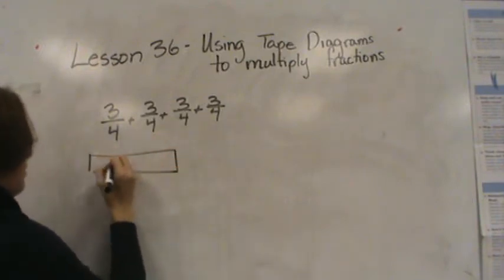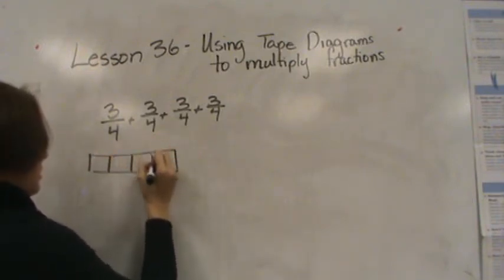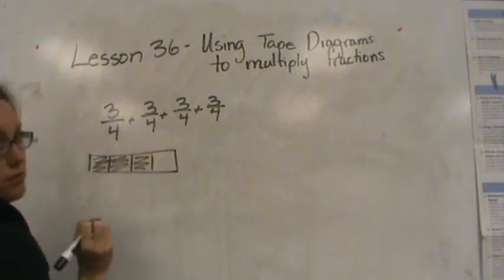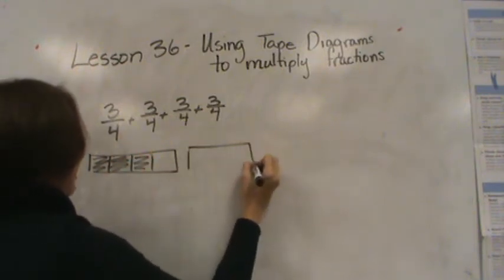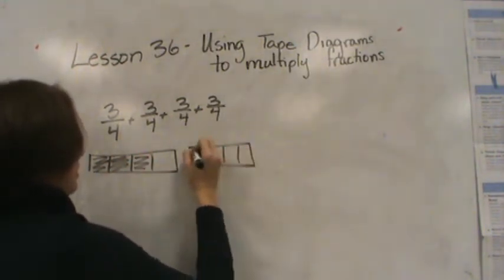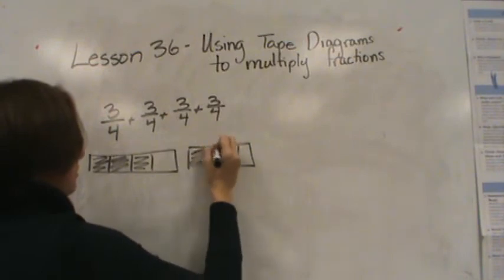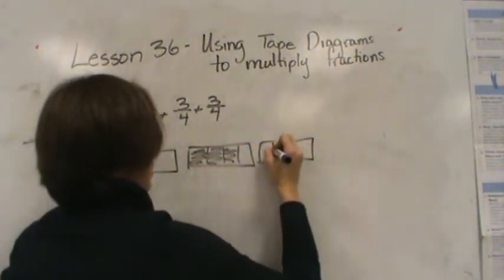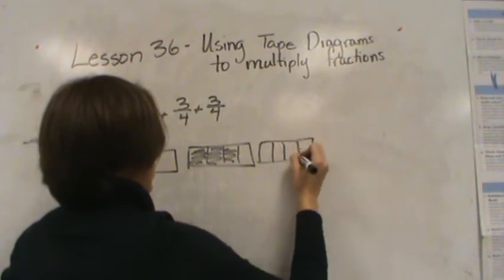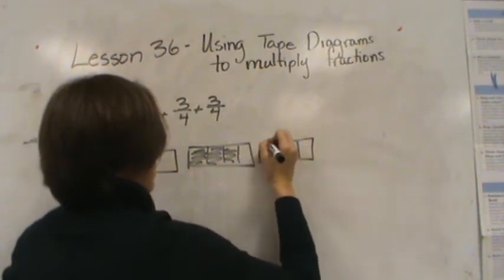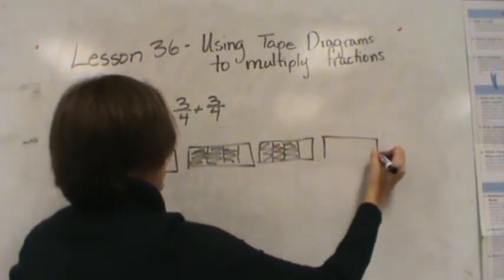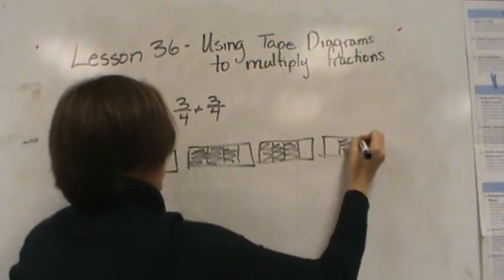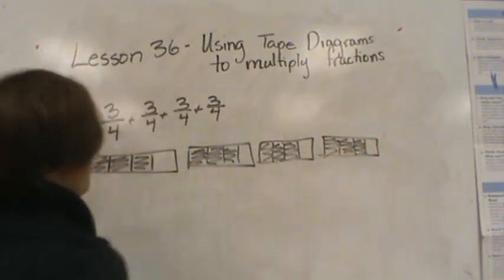So here's my first one. I have 1, 2, 3/4. That's one of them. 1, 2, 3/4. 1, 2, 3/4. And 1, 2, 3/4.